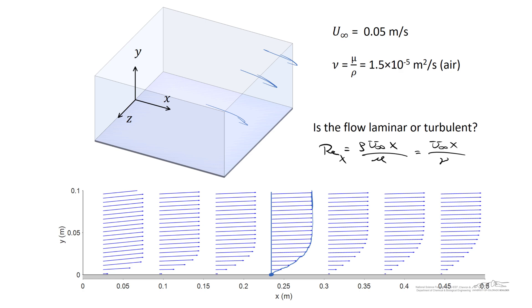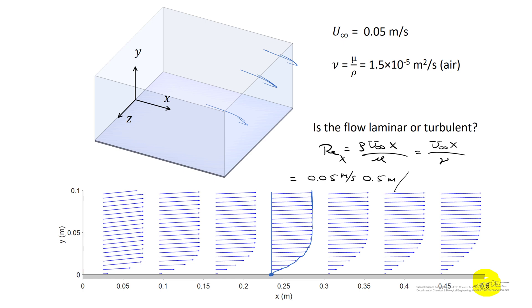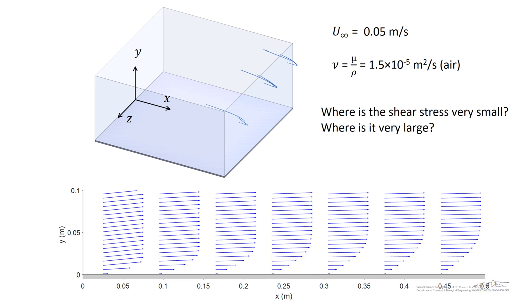To determine whether the flow is laminar or turbulent at a given location, we calculate the Reynolds number. If it is less than 500,000, the flow will be laminar. Let's calculate the largest value, which occurs at the trailing edge of the plate at 0.5 meters. Using u infinity of 0.05 meters per second, L of 0.5 meters, and kinematic viscosity of 1.5 times 10 to the minus fifth meters squared per second, the maximum Reynolds number is 1,700 — well below 500,000 — so the flow is definitively laminar along the entire length of the plate.